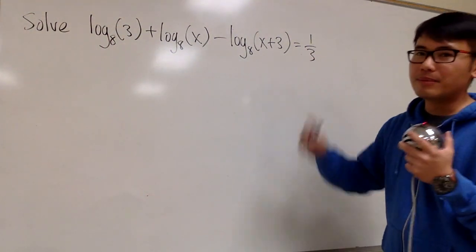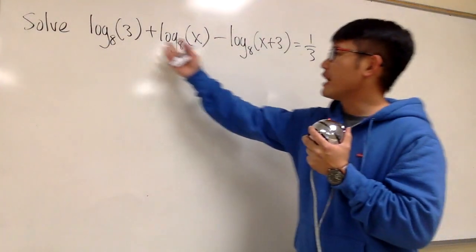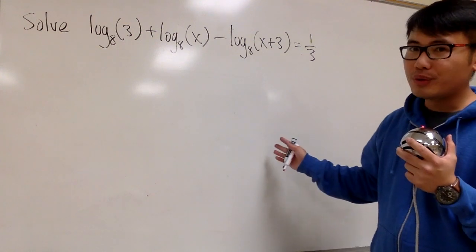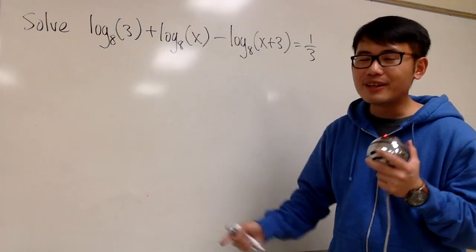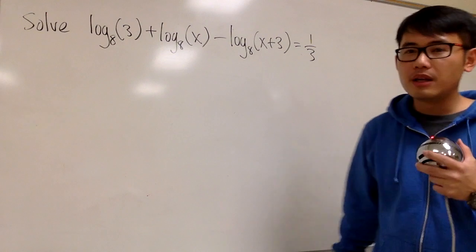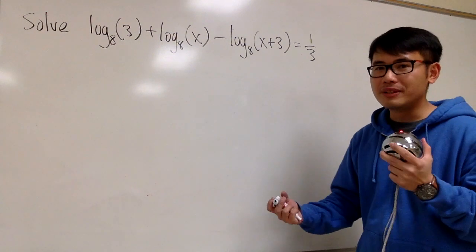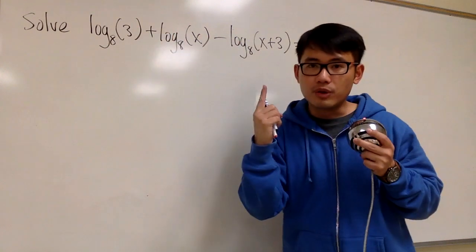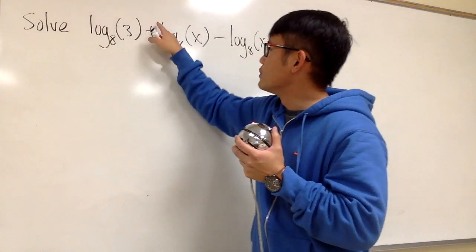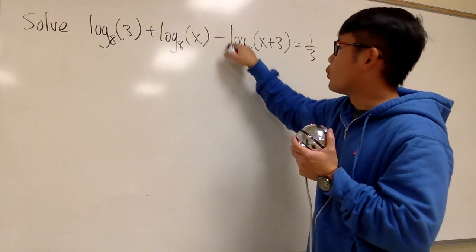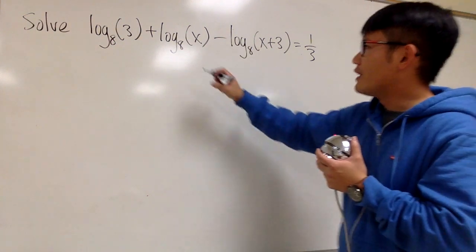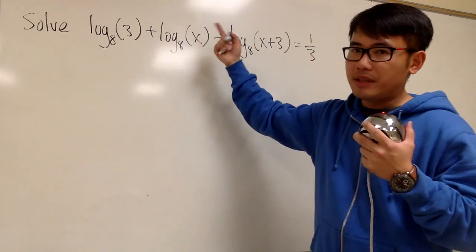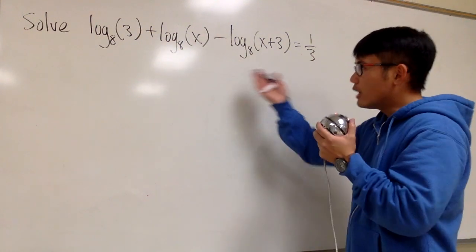This is the first one that I'm going to demonstrate. As we can see, on the left-hand side, we have 3 log base 8. The first thing that we have to do is we must combine them together into just one logarithm, so we have to use the log properties. If you look at everything in front of the log, it is just 1 in front — this is 1, this is 1, and this is technically minus 1. If you have other numbers such as 2, you have to be sure to bring the 2 to the inside and it becomes the exponent. But we don't have to do that here.